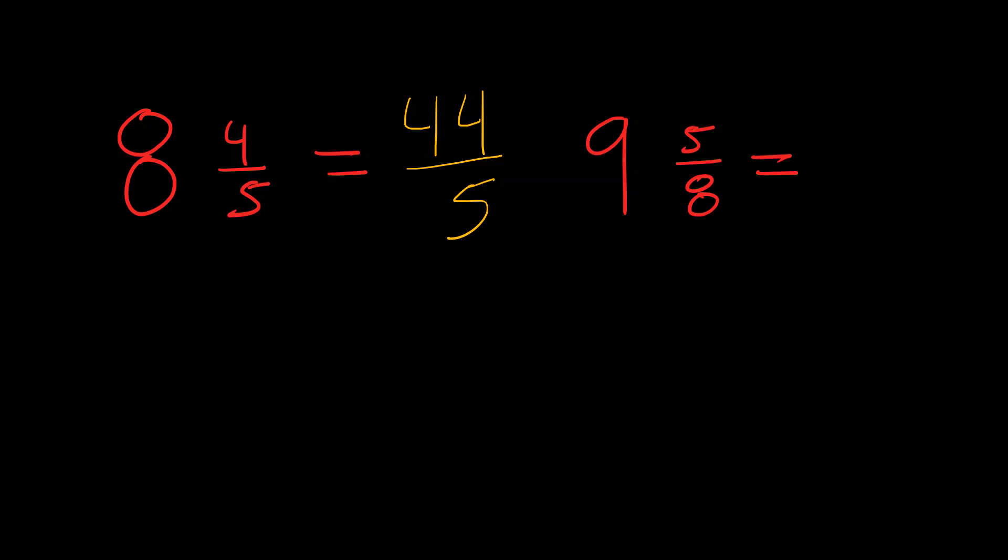Now we have nine and five-eighths. We have to do eight times nine. That's 72 plus five, that's 77. So now we're going to have 77 over eight.